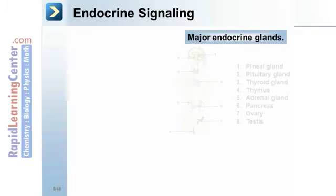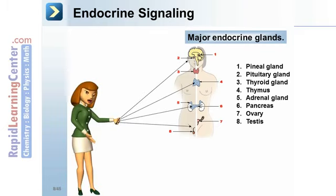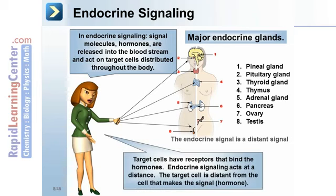Endocrine signaling is a distant signal involving major endocrine glands. Signal molecules called hormones are released into the bloodstream and act on target cells distributed throughout the body. Target cells have receptors that bind the hormones. The target cell is distant from the cell producing the hormone.